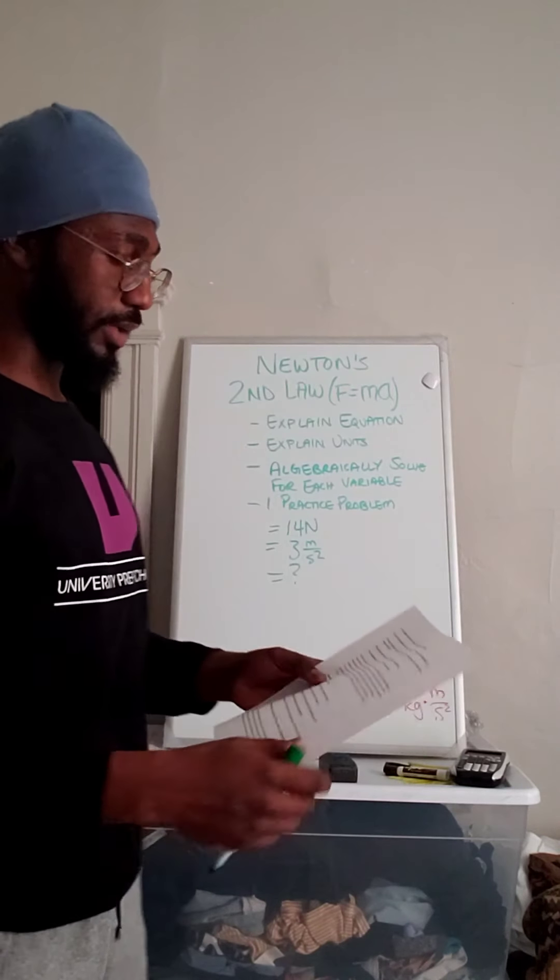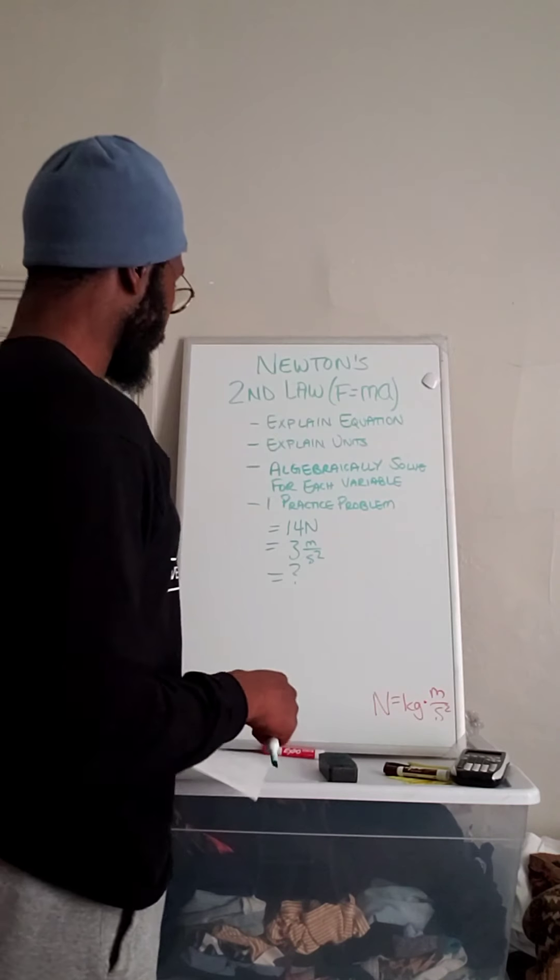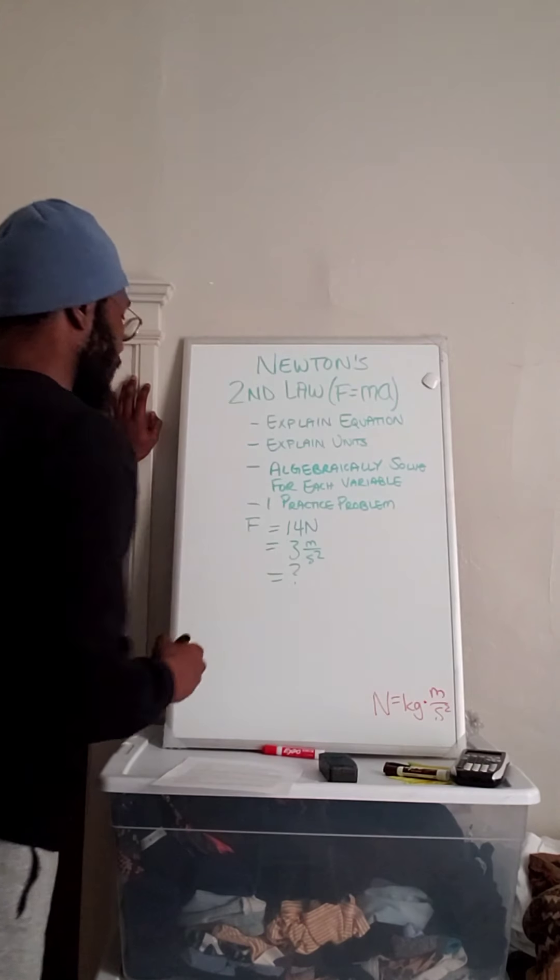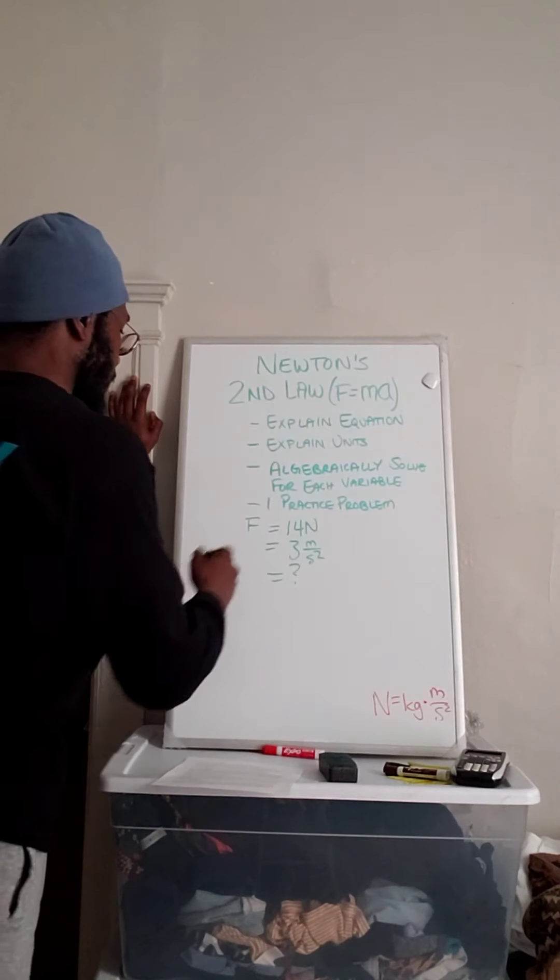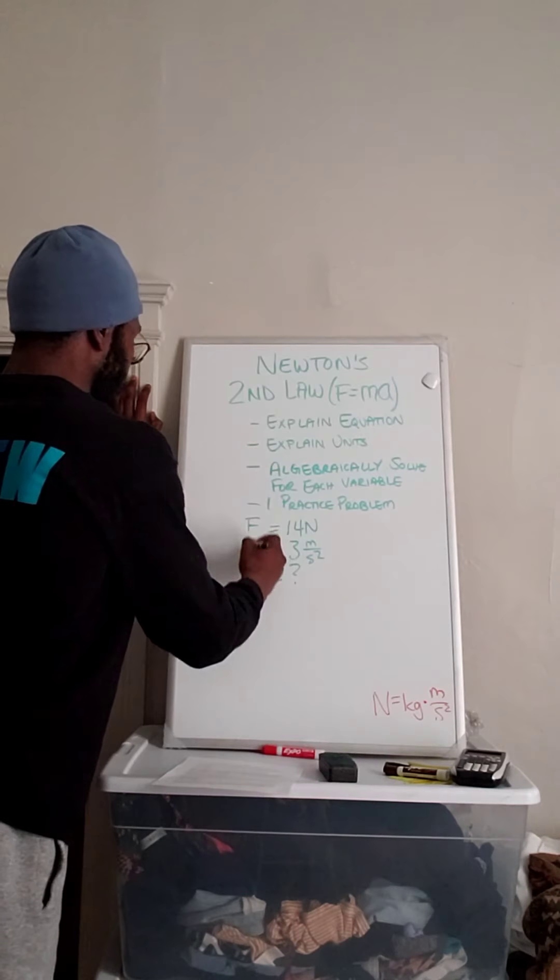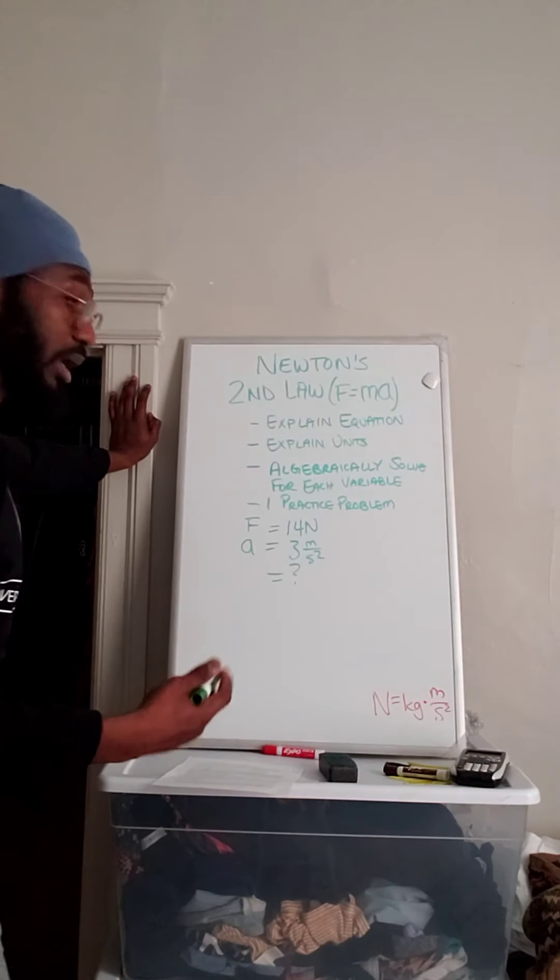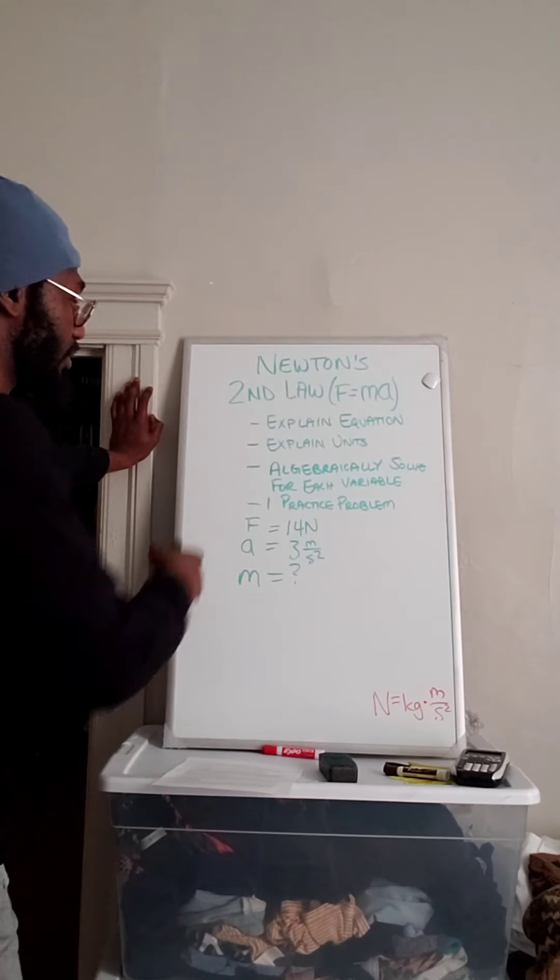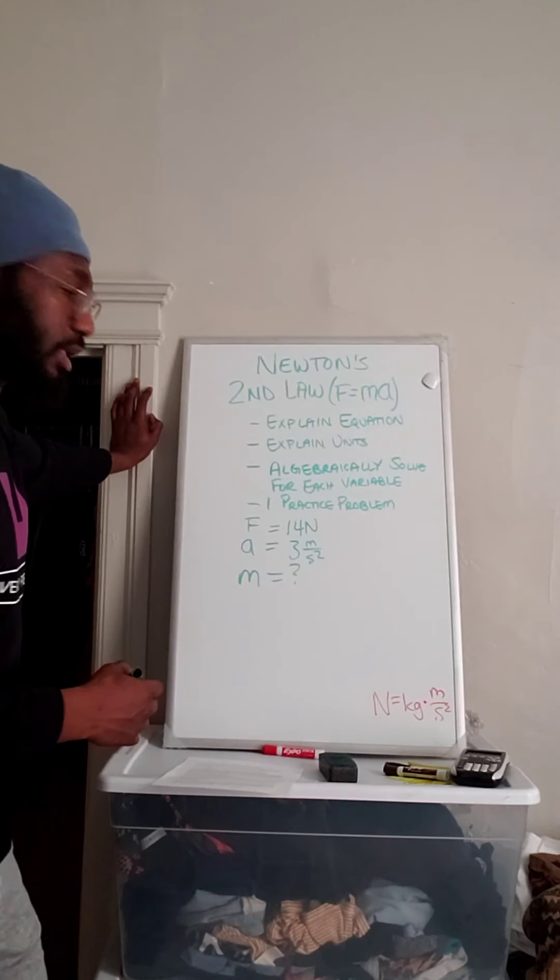So 14 newtons, we know newtons is a unit of force, so we can put F here. 3 meters per second squared, meters per second squared is a unit of acceleration. And it says, what is the mass of the object? Mass is represented by the variable M. So now we have all our knowns and unknowns listed.